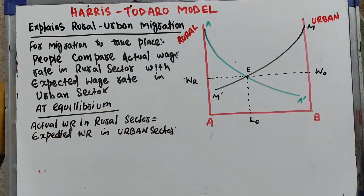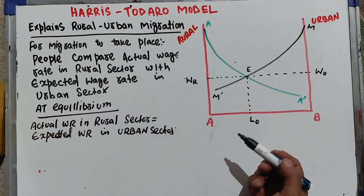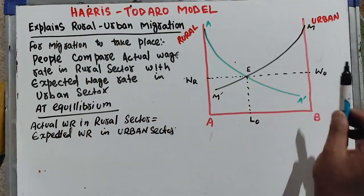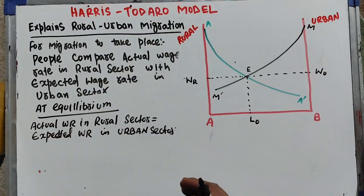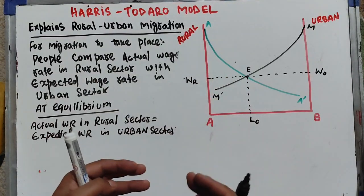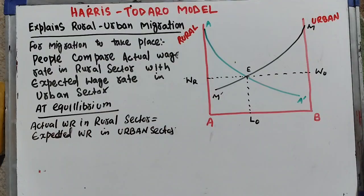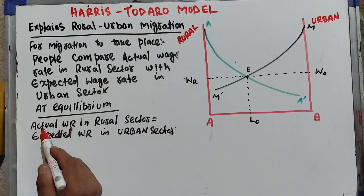However, this initial equilibrium point E is not a plausible equilibrium in this model, because we assume the actual wage rate in the rural sector is less than the actual wage rate in the urban sector. This is because rural wages are flexible and seasonal, subject to fluctuations, whereas urban wages are in the organized sector with fixed wage rates.